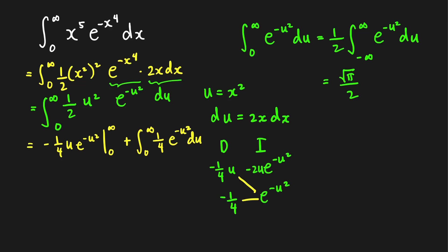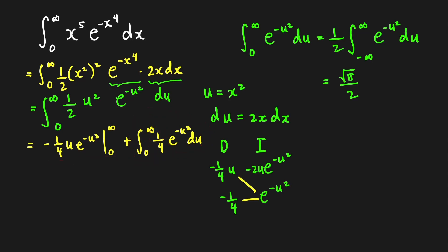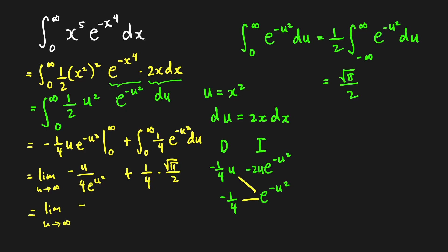Evaluating the boundary term: we take the limit as u goes to infinity of negative u over 4 times e raised to negative u squared, minus the value at u equals 0, which is 0. Applying L'Hôpital's rule to the limit gives the limit of negative 1 over 4 times e raised to u squared times 2u as u goes to infinity, which clearly goes to 0. So the boundary term vanishes, and the final answer is one-fourth times square root of pi over 2, which equals square root of pi over 8.